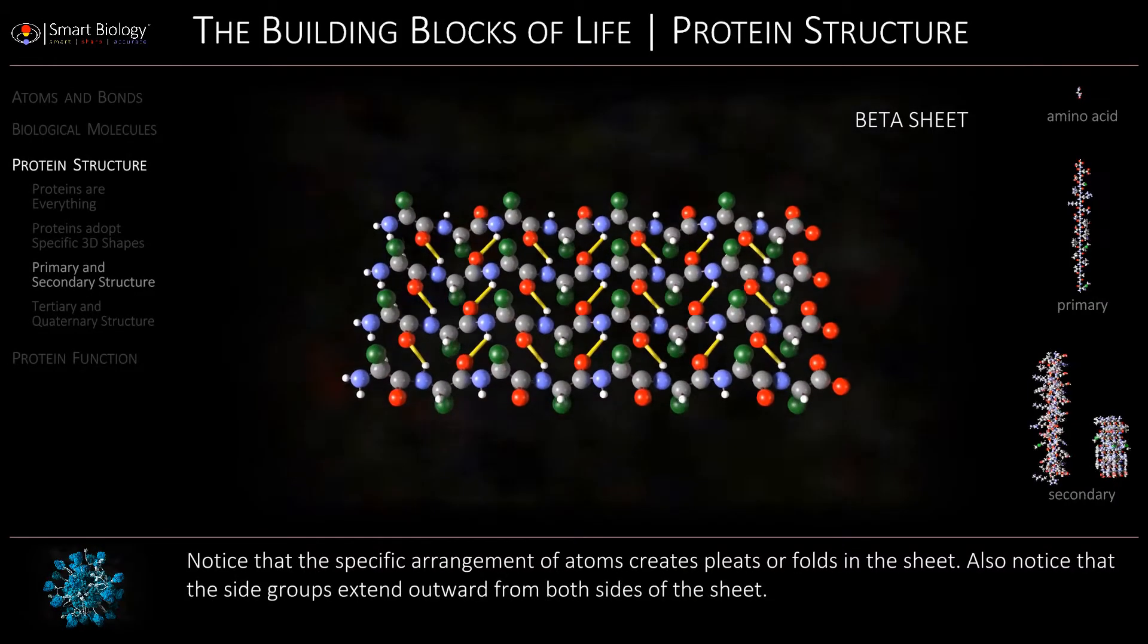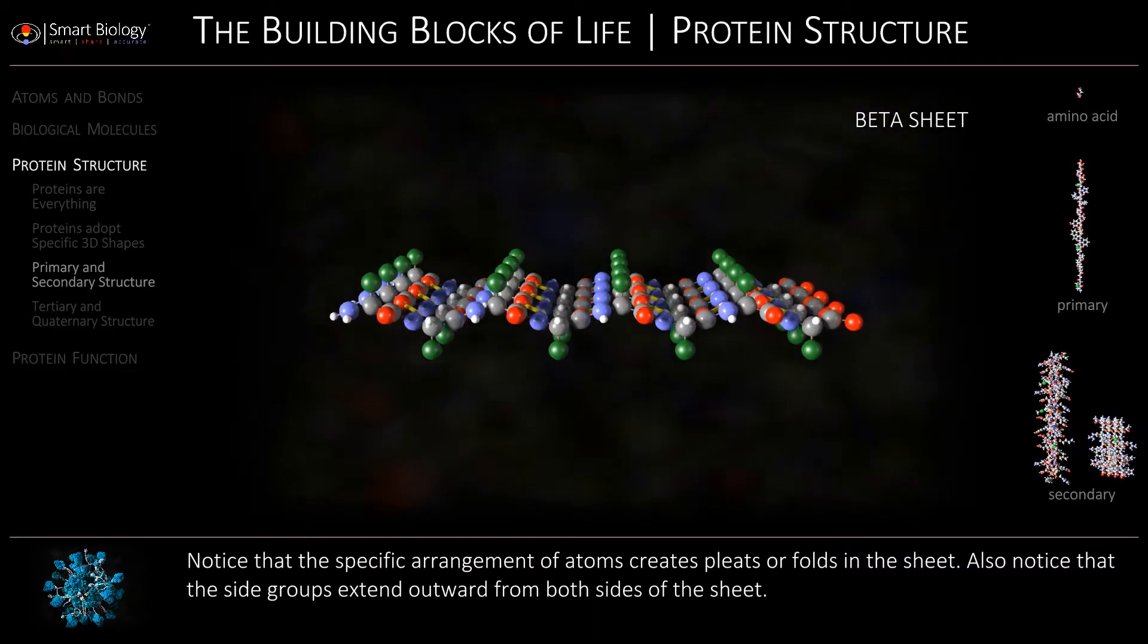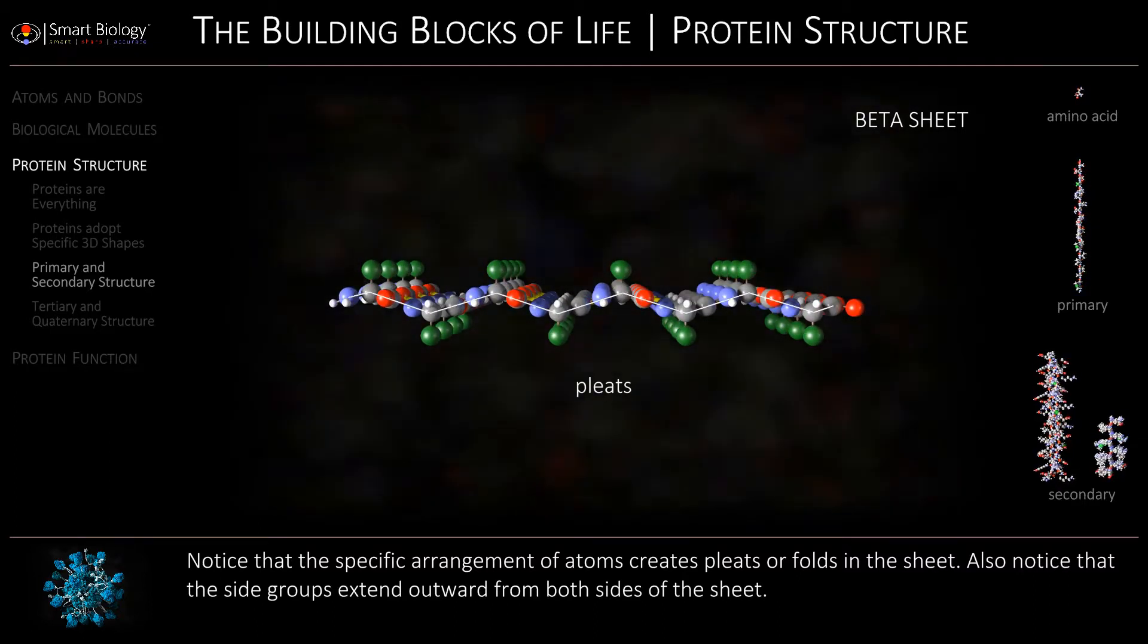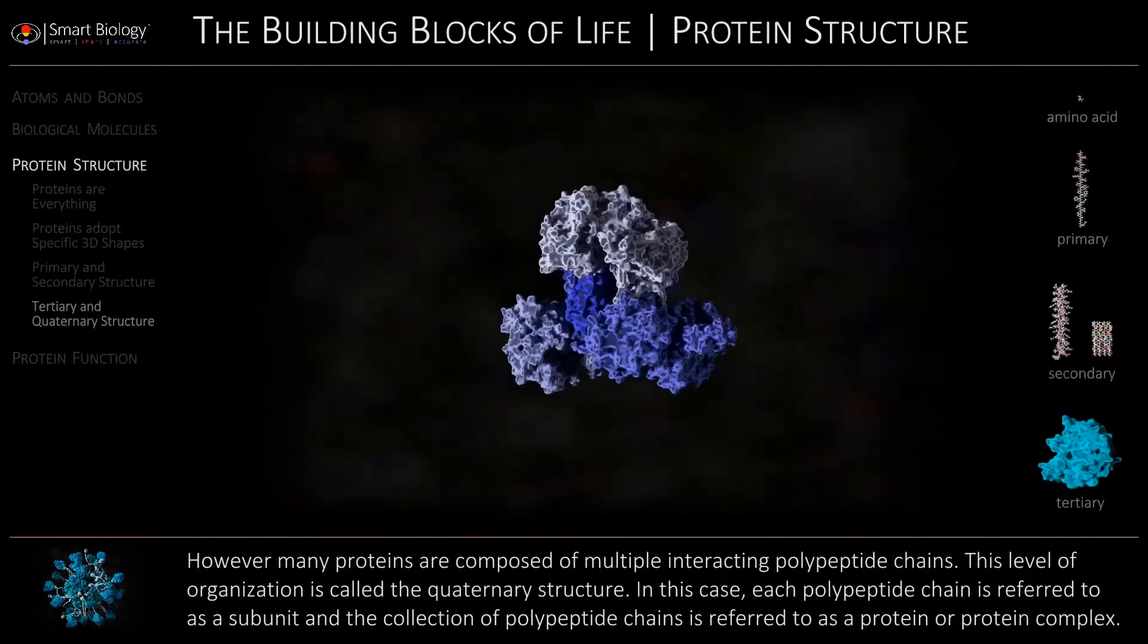Notice that the specific arrangement of atoms creates pleats or folds in the sheet. Also notice that the side groups extend outward from both sides of the sheet.